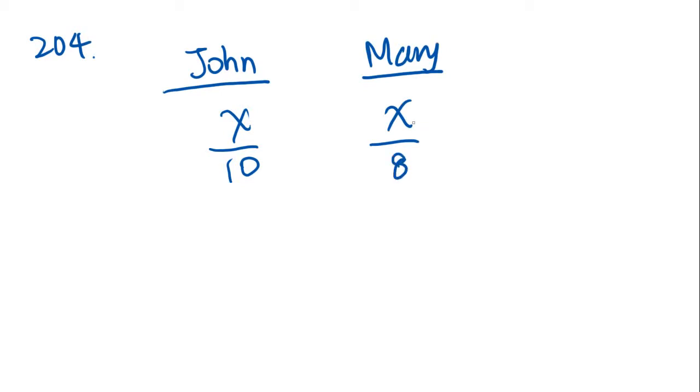Mary gave John Y dollars of her payment. What that means is Mary lost Y dollars, and John gained Y dollars. Mary gave John Y dollars for payment so that they would have received the same hourly wage, so that the two wages are equal.